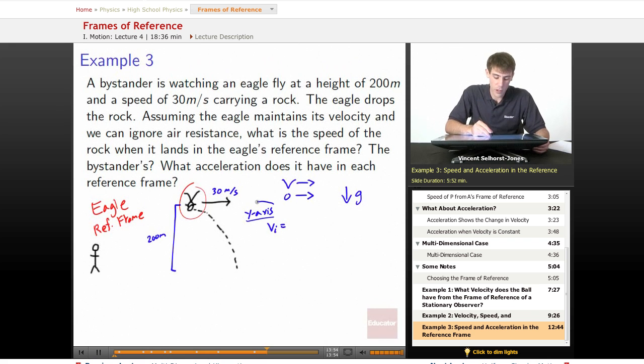We're only going to be looking at the y-axis. So, the v-initial is equal to zero, because at first, it's not going anywhere, it's just going along with the eagle at its current speed.